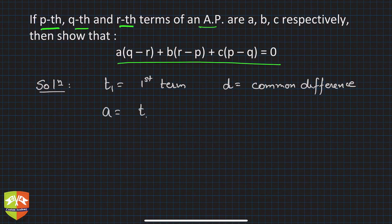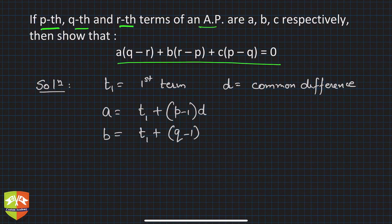a = t₁ + (p-1)d. That is how the nth term is found. So b = t₁ + (q-1)d, and c = t₁ + (r-1)d.